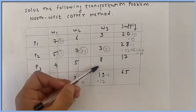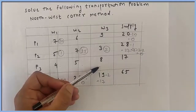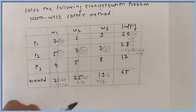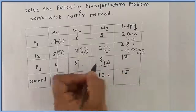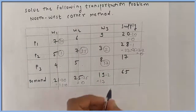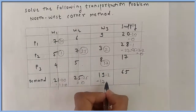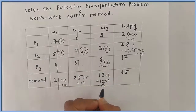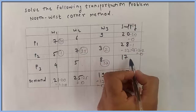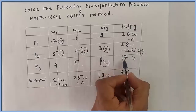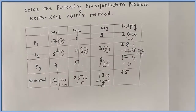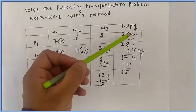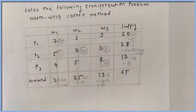At the last cell, demand is 17 and supply is 17, so we allocate all units. After this allocation, demand becomes 17 minus 17 equals 0, and supply also becomes 0. All demands are 0 and all supplies are also 0.